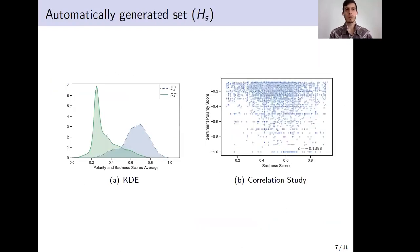In this case, we're observing the results of the automatically derived sets. The first set is based on the sentiment polarity score. On the left, we see the distribution of the polarity and sadness scores average. We notice that there is intersection between the curves. This intersection is actually desired since it helps to improve the decision in the boundary cases. On the right, we're studying the correlation between the sentiment polarity score and the sadness score. The correlation score is very close to zero, which tells us that there is almost no correlation between them.